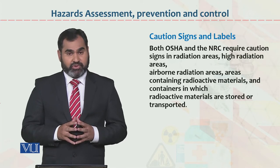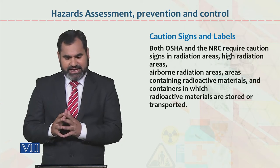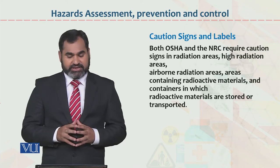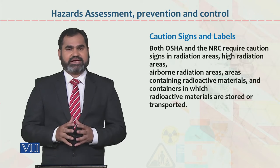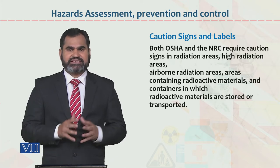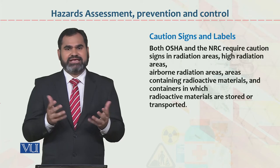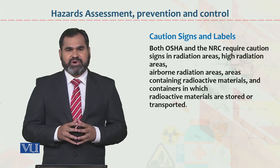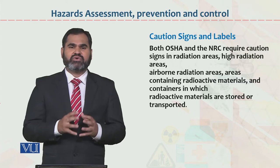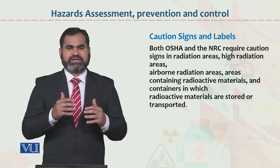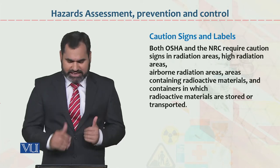For example, both occupational safety and health associations and NRC require caution signs in radiation areas. Particularly if you see radiation areas, you can write precautions indicating there is a radiation area, so that employees are aware of the information and can avoid it.